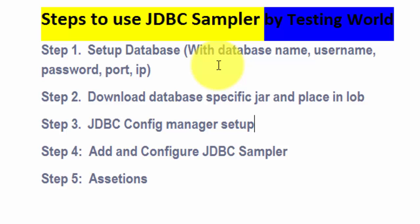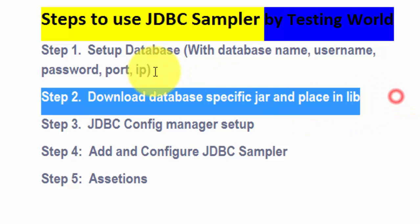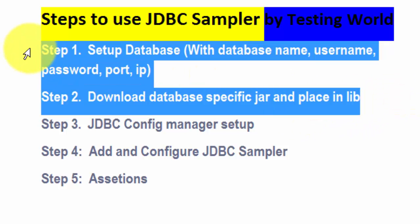The database could be on a remote machine. We need the database name, username, password, port number, and IP of that machine as prerequisites. Then we need to download the database-specific JAR and place it into the lib folder of JMeter. Once these two steps are done, we can set up the JDBC Sampler.